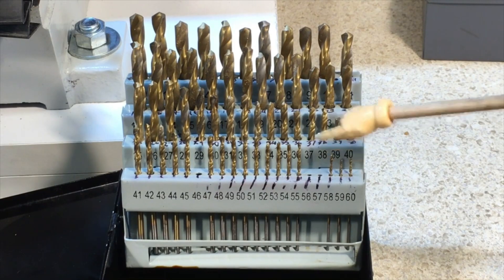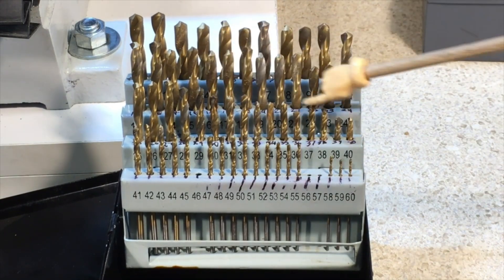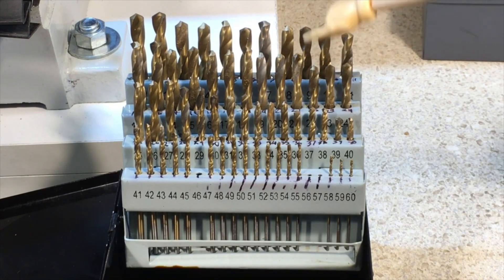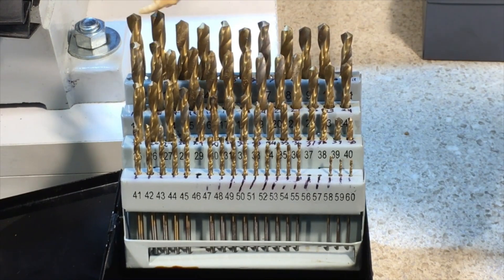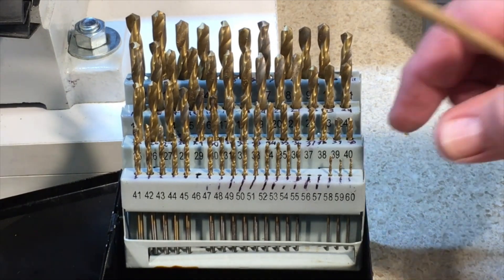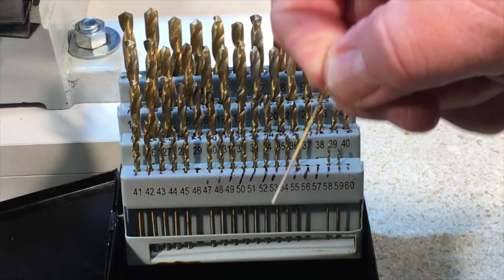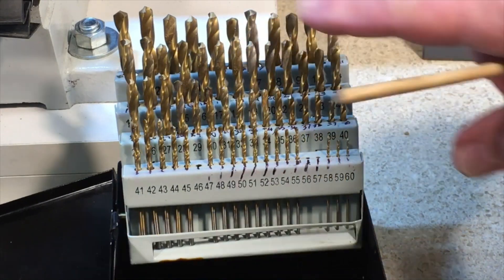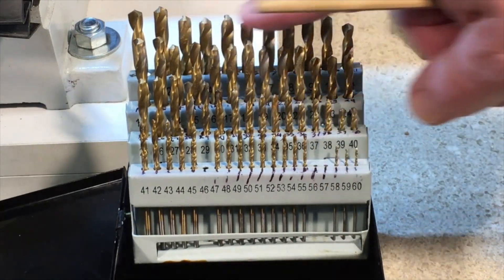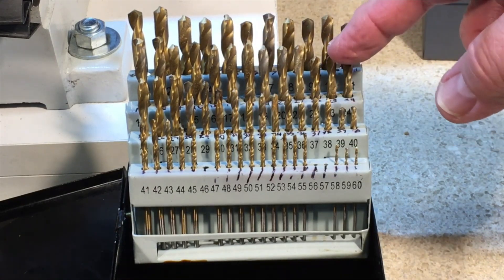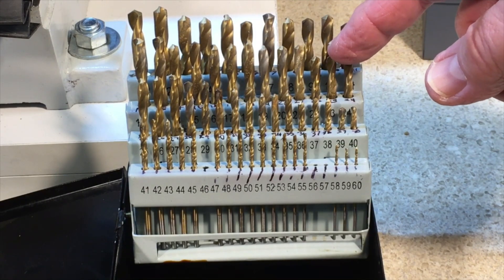If you're new to the world of machining, you may not be familiar with so-called number drills. This is a standard set of number drills going from number one, which is the largest, down to a number 60, which is the smallest. As you can see, the number 60 is a very small drill bit. The benefit of the number drills is that they fill in a lot of the gaps that are in between sizes on the fractional drills.